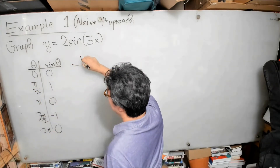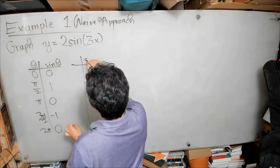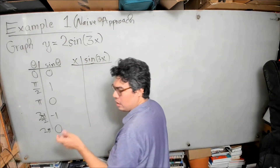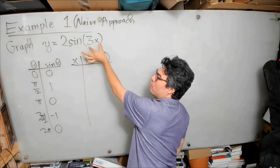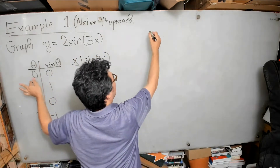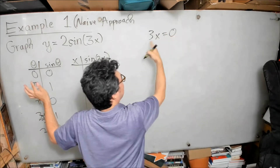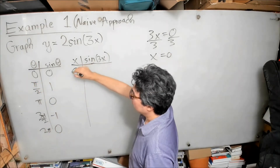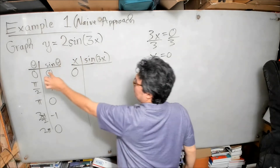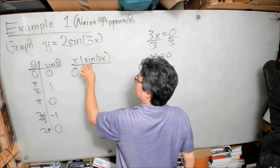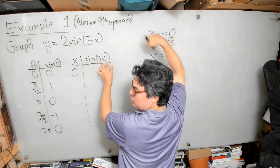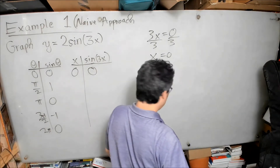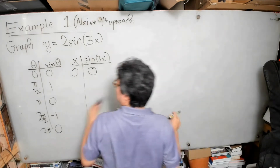I'm going to make a table for sine of 3x and go line by line. The first question I ask is: what does x have to be for 3x to equal 0? If 3x equals 0, divide both sides by 3 and x equals 0. Since sine of 0 is 0, sine of 3 times 0 is also 0.